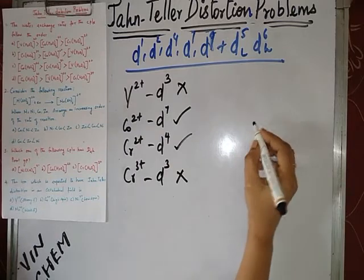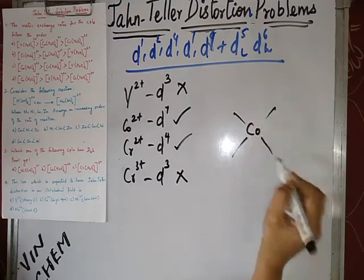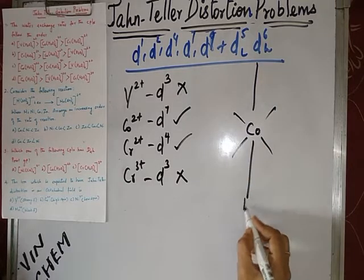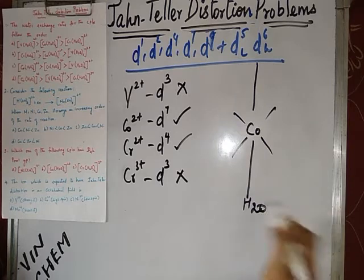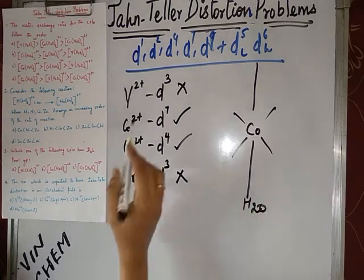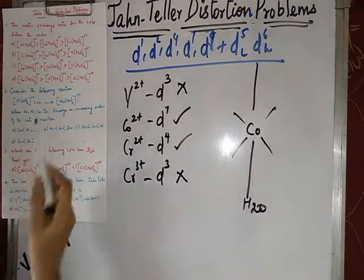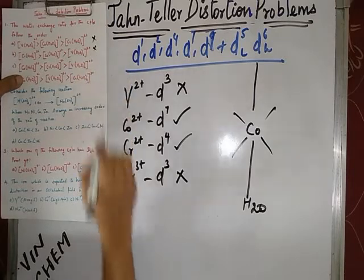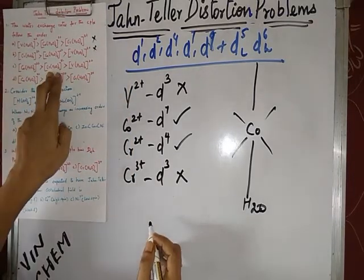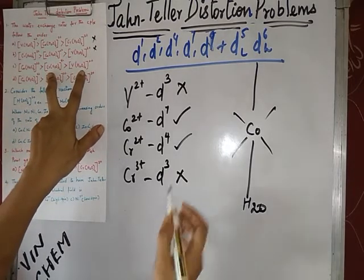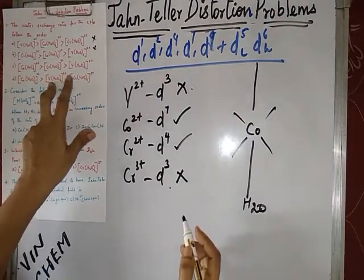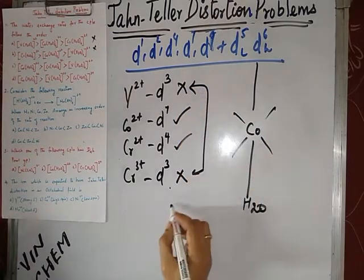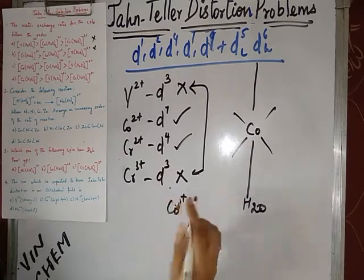If Jahn-Teller distortion is present, what is the benefit? For chromium 2+ and cobalt 2+, where distortion is present, elongation takes place along the z-axis, so the two axial ligands will easily exchange with other ligands. H₂O will be easily exchanged, so the reaction goes faster — these come first. Since Co²⁺ and Cr²⁺ both have distortion and come first, we eliminate options without them. Cr³⁺ is not 2+ so cobalt 2+ comes first.